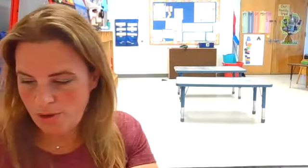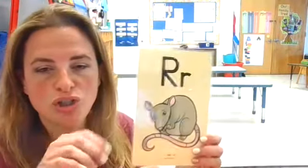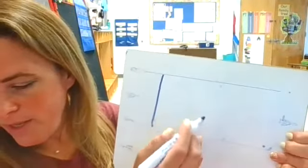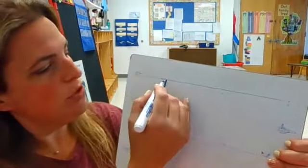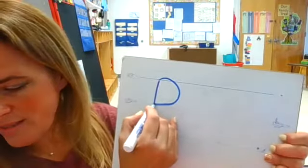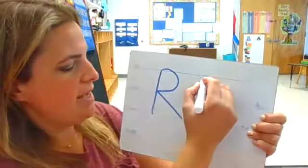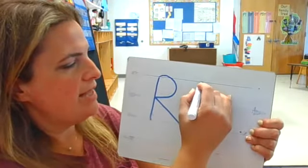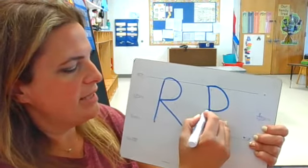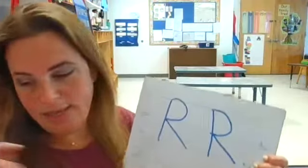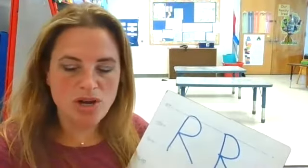Next letter this week is letter R. R, rat, ur. So letter R, you're going to start at the skyline. Go down to the grass line and stop. Then go to the skyline, go around to the plain line, and stop. And then go and slide diagonal down to the grass line. R, rat, ur.